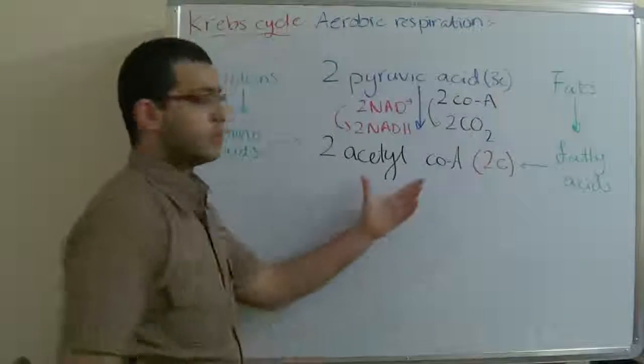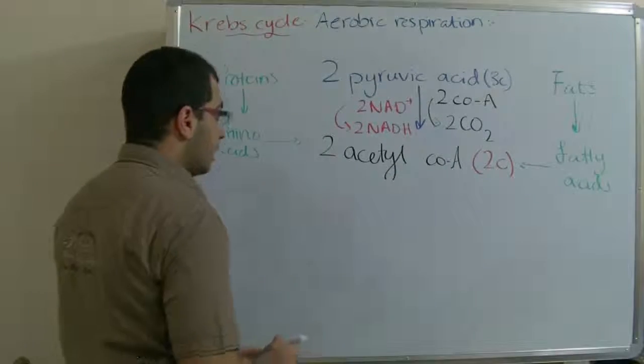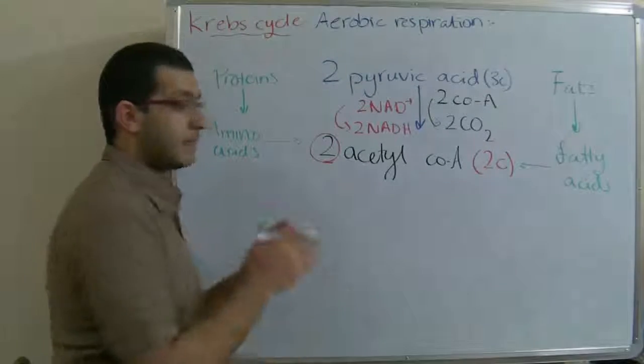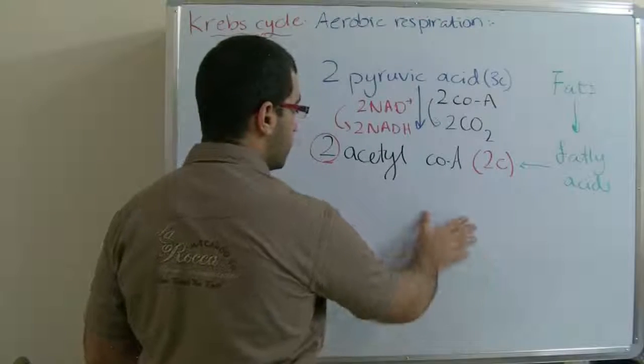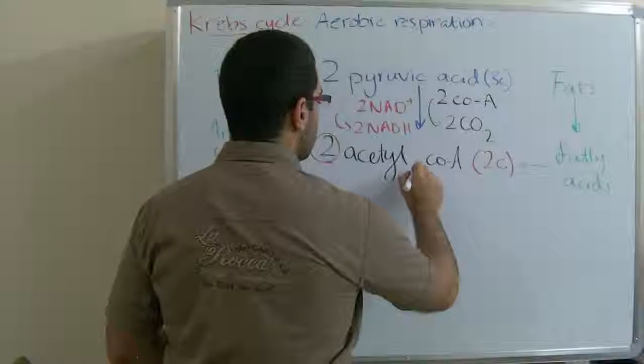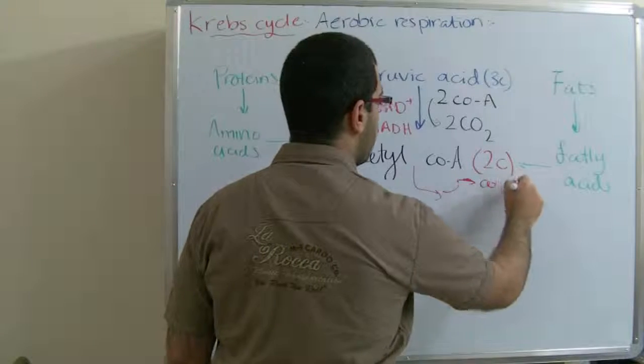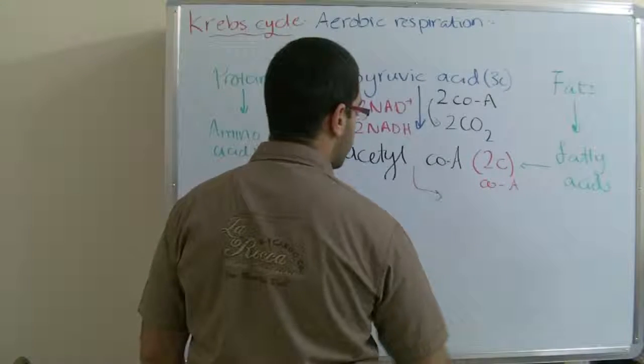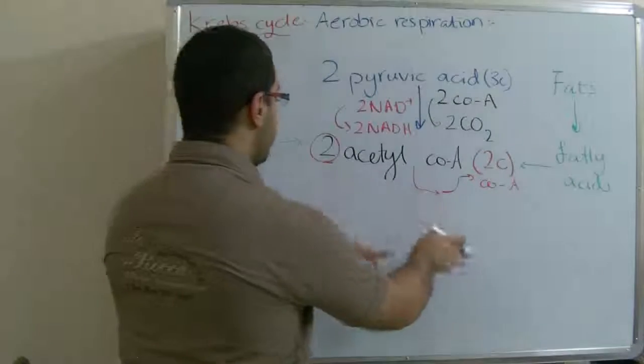So the Krebs cycle begins with these two Acetyl CoA. The two molecules do not enter the cycle at the same time. One molecule enters and the other waits until the first one finishes, then it goes. So here we have a CoA waiting until its turn comes in order to join the cycle, and the other enters the cycle.